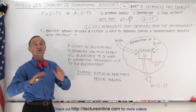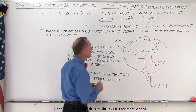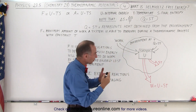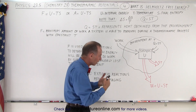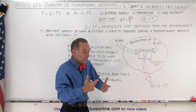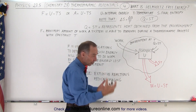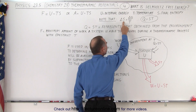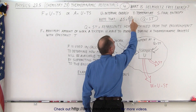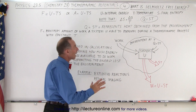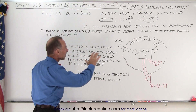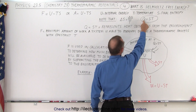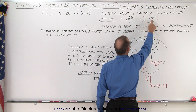Without going into too much detail of what entropy is, the equation for the change in entropy is equal to the heat added or subtracted — Q simply represents the amount of heat added or taken away from the system. The change in entropy is equal to the ratio of how much heat was exchanged divided by the temperature at which this happens. With Helmholtz free energy, we're going to keep the temperature of the environment constant, so we can write Q as simply the product of entropy times T.